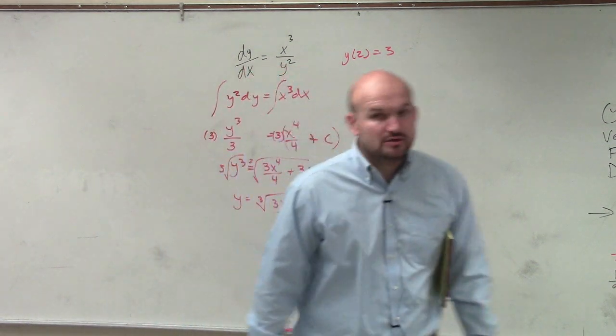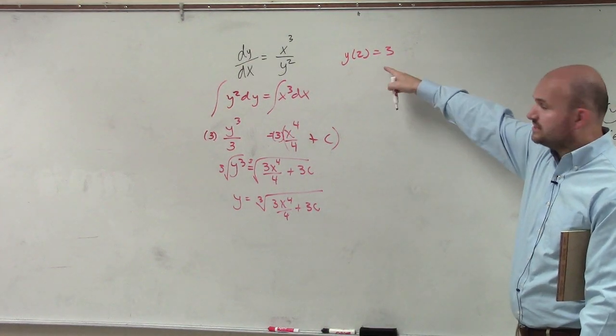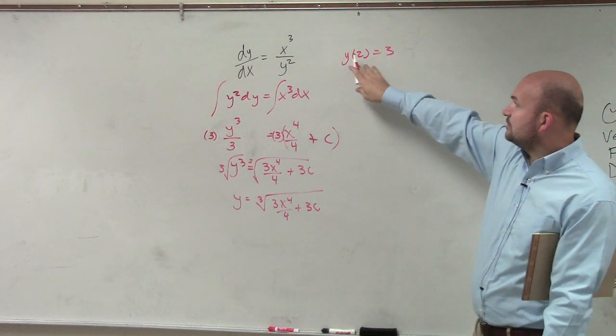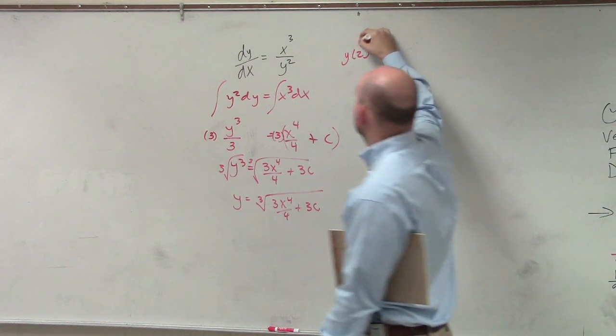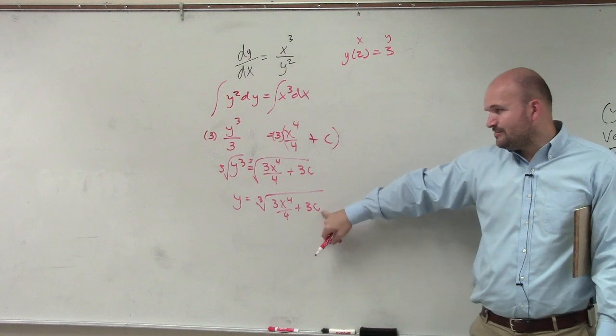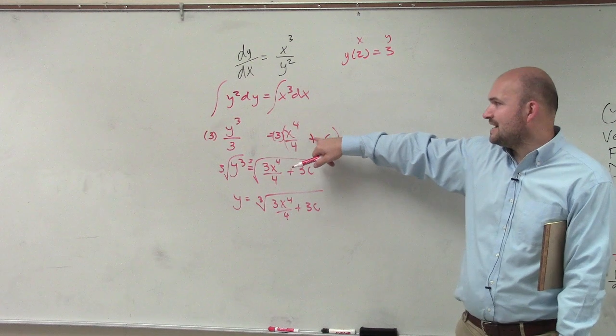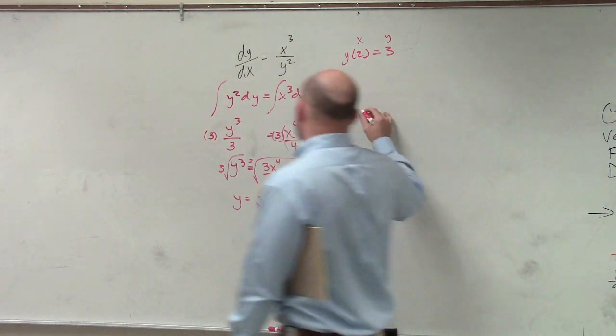So that is going to be your general solution. And if we want to find our particular solution given our 2 and 3, what we can do is plug this 2 in for the x and the 3 in for the y to find our value of c. However, am I going to want to solve for c here? No, that doesn't sound much fun. But I could go back up to this original equation, and it's really not that bad.